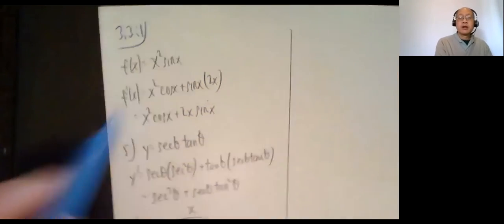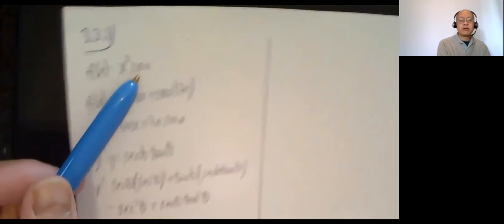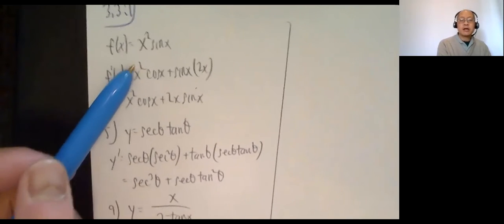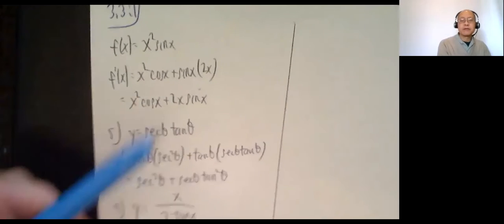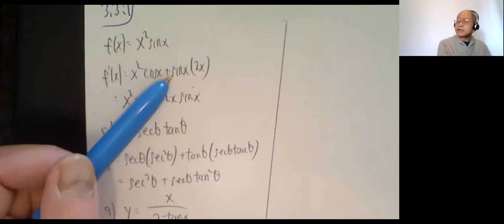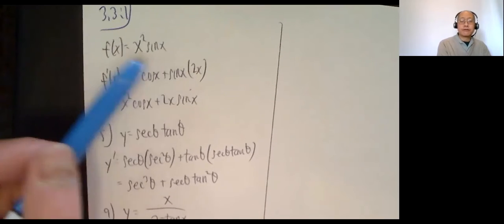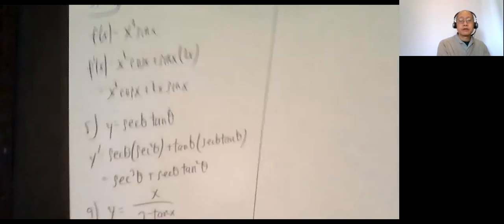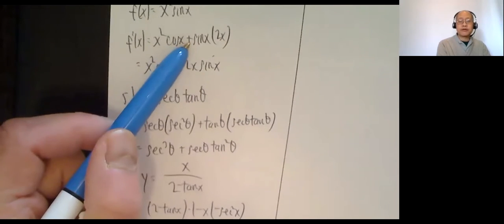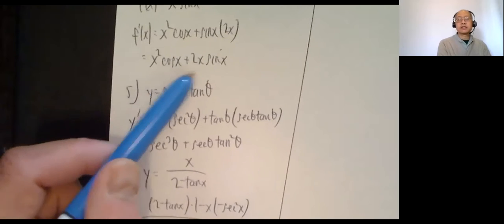Number one: f of x equals x squared sine x. Product rule. F prime of x is first times derivative of the second — we now know the derivative of sine x is cosine x — plus the second function sine x times the derivative of the first, which is 2x. Put the 2x in front: x squared cosine x plus 2x sine x.